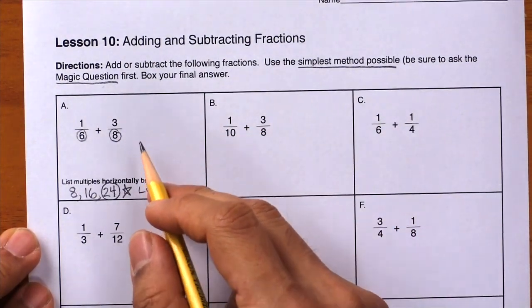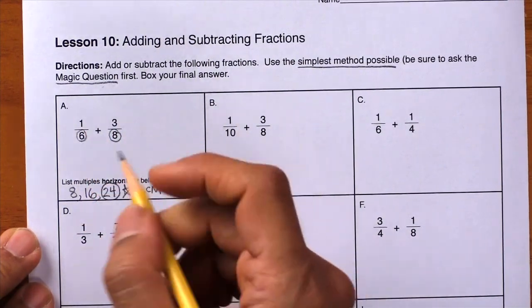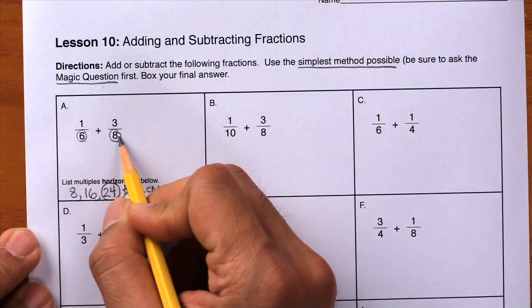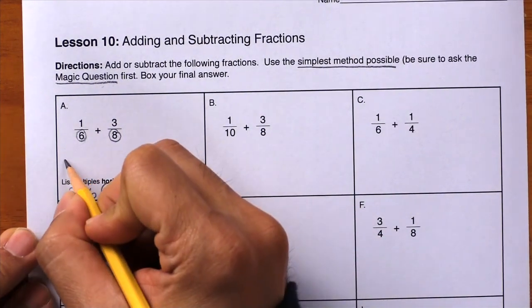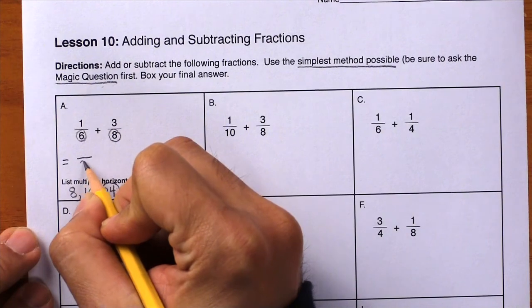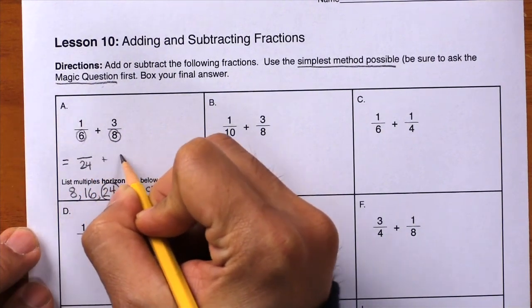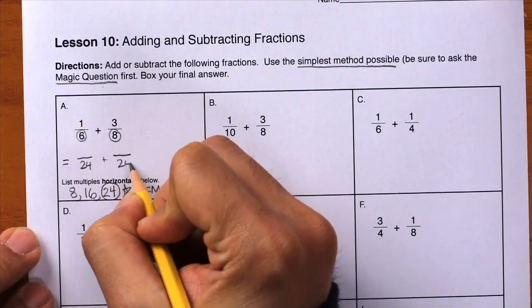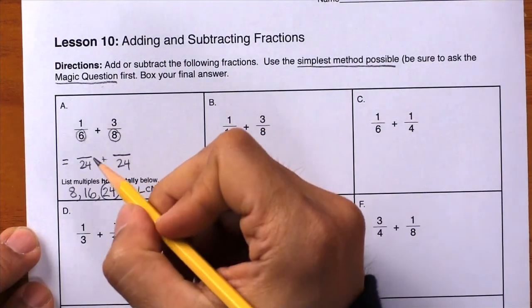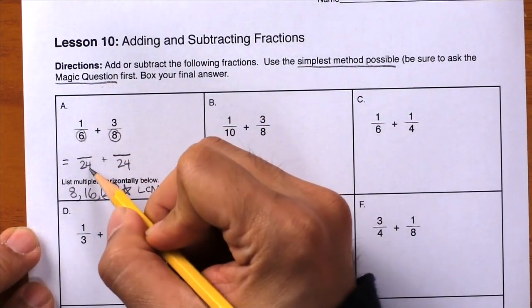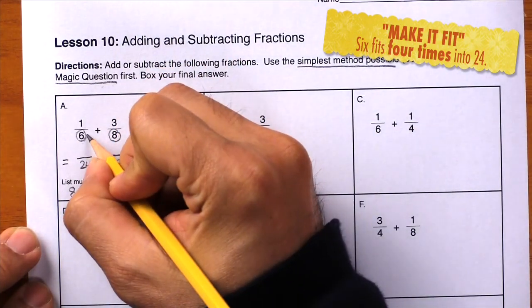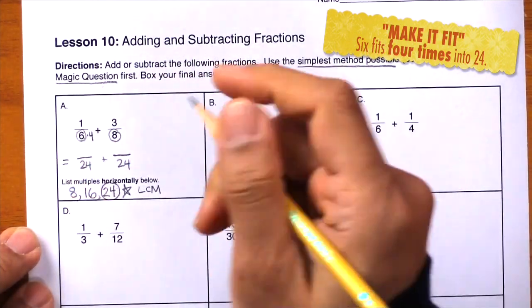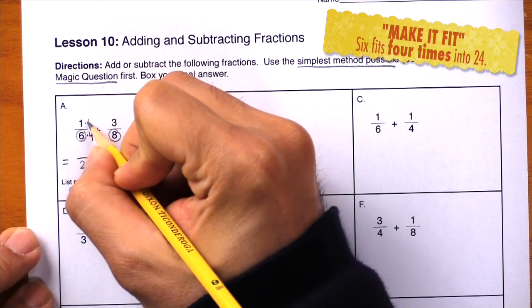Now let's rewrite this problem. Instead of using sixths and eighths, we're going to use twenty-fourths. So on the next line, write equals blank over twenty-four plus blank over twenty-four. How did we get from the six to the twenty-four using multiplication? And we multiplied by four. So times four in the denominator times four in the numerator.